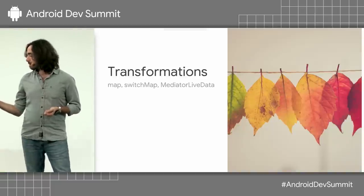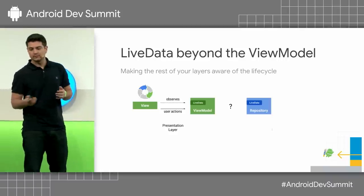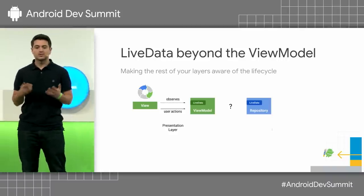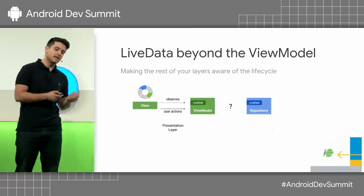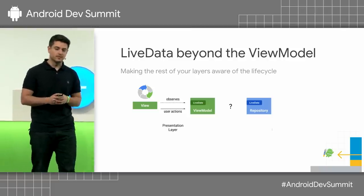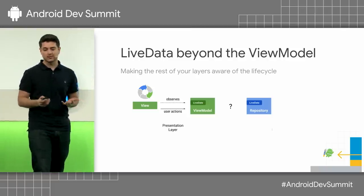Let's talk about how to combine LiveData and talk about transformations. The library provides two — map and switchMap — but you can create your own using MediatorLiveData. We already said that LiveData is great to communicate a view and a ViewModel. But what if we have a third component, maybe a repository, that is also exposing LiveData? How do we make this subscription from the ViewModel? We don't have a lifecycle there.